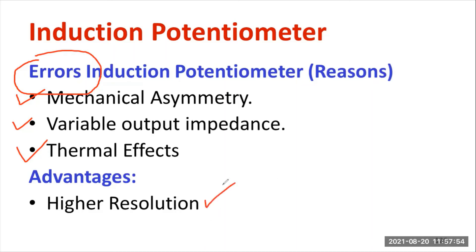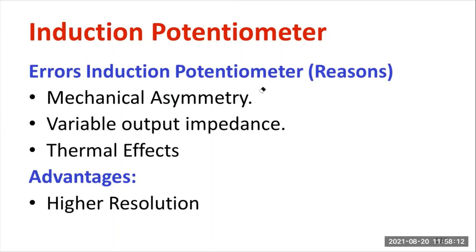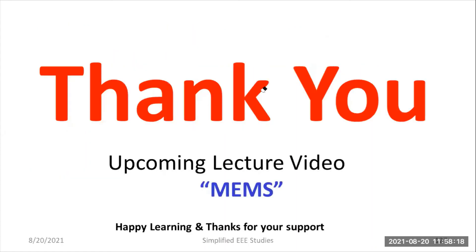A major advantage is that even a small deviation in the shaft position will produce an output voltage, meaning it shows high resolution. That is the major advantage of the induction potentiometer. It is also quite simple and works based on Faraday's laws of electromagnetic induction — not much technical knowledge is required to understand and maintain it. In this session, I have discussed what the induction potentiometer is, its working principle, construction details, errors, and the major advantage.